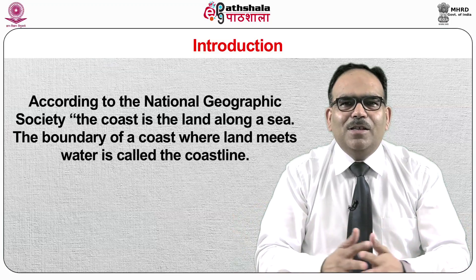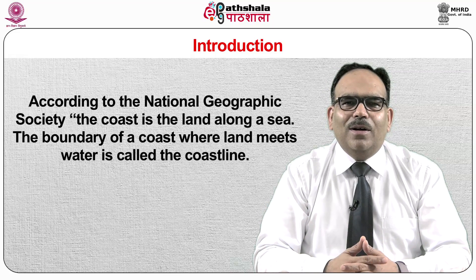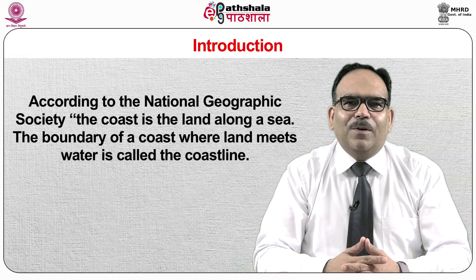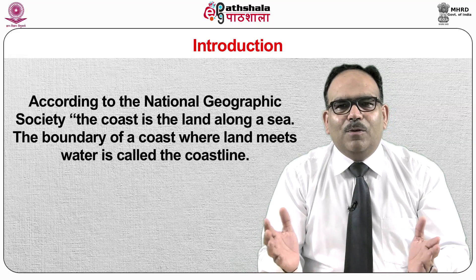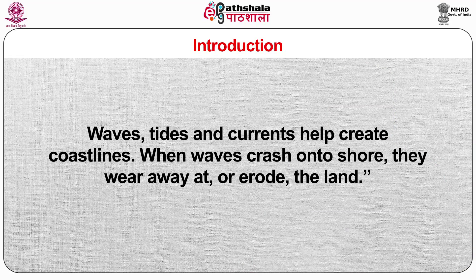According to the National Geographic Society, the coast is the land along a sea. The boundary of a coast where land meets water is called the coastline. Waves, tides and currents help create coastlines. When waves crash into shore, they wear away or erode the land.